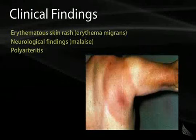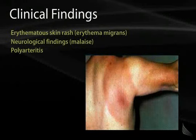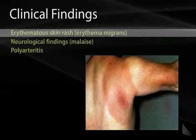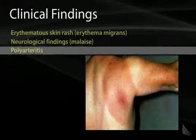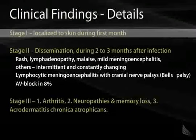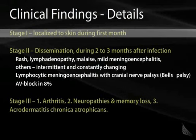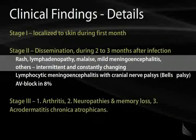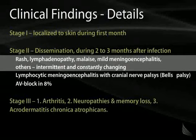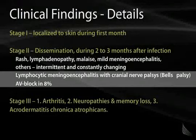Clinical findings depend on the stage. Stage 1 is the classic erythema migrans (erythema chronica migrans) — a target lesion with a paler central area — along with malaise and possibly polyarthritis, localized to the skin during the first month. Stage 2 represents dissemination 2 to 3 months after infection, with another rash, lymphadenopathy, malaise, and mild meningoencephalitis. You can get lymphocytic meningoencephalitis with cranial nerve palsies; bilateral Bell's palsy makes Lyme disease the number one cause. It can attack the heart and cause AV block in up to 10% of patients.